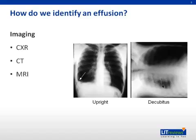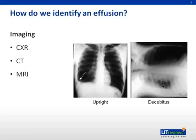Since x-rays are only two-dimensional, consider multiple views, including lateral and decubitus angles, to get a better idea of the location and volume of the fluid. Other imaging modalities are more sensitive and can give you greater insight into the volume, identity, and potentially the source of the fluid.